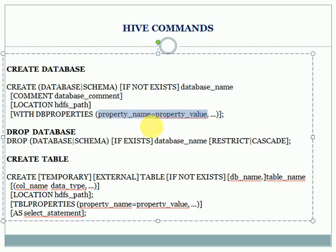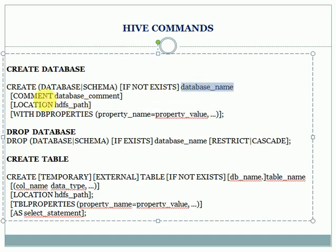So the way to create a database is: CREATE DATABASE or SCHEMA, with the optional IF NOT EXISTS clause. The database name is a user-defined name, COMMENT allows you to provide a user-defined description, and LOCATION is where you provide the storage path.